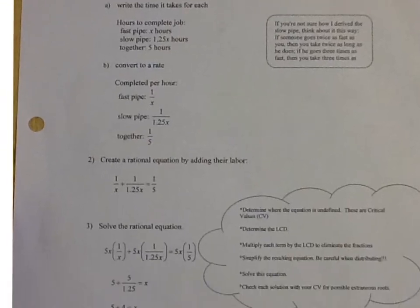And now you're going to write an equation. So the equation is the fast pipe plus the slow pipe equals the together. So I have 1 over X plus 1 over 1.25X is equal to 1 over 5.